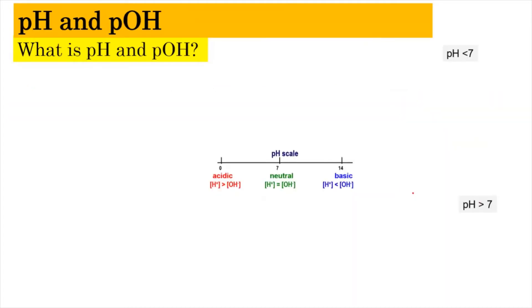So, pH and pOH — what are they? Looking at the pH scale, we have values from 0 to 14. The region between 0 to 7 refers to the acidic region, where the concentration of H⁺ is higher than OH⁻. At the neutral state, pH 7, the concentration of H⁺ equals the concentration of hydroxide. In the basic region, the concentration of hydroxide ion is larger than H⁺.